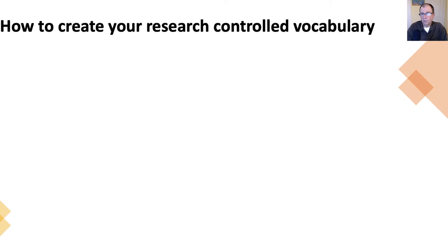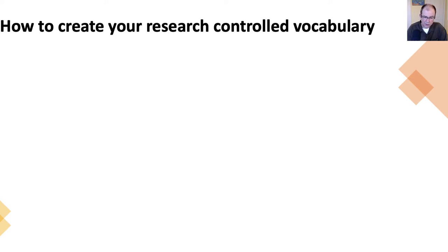I'd like to give you a real-world example about how this looks, and this is specifically from some research that I did with a colleague of mine at the University of Toronto. We were interested in geospatial data and the citation of geospatial datasets within the research literature. The first thing we needed to do was think about geospatial data and how we wanted to find all the studies that specifically used geospatial datasets.